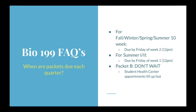When are packets due each quarter? For fall, winter, spring, and summer session 10, they are due by Friday of week two at 12 p.m. For summer session one or summer session two, they are due Friday of week one at 12 p.m. This is critical — to be eligible for Bio 199, you must be cleared by the BioSci Student Affairs Office. If you miss these deadlines, you will not be able to participate that quarter. Packet Bs take longer, so don't wait to get started, and note that Student Health Center appointments fill up fast.